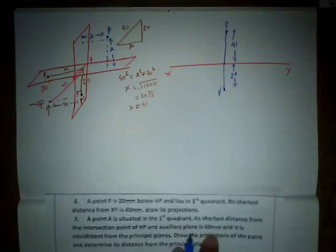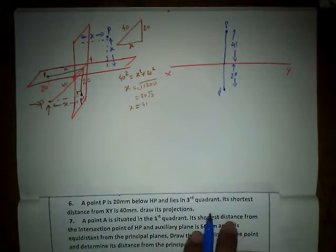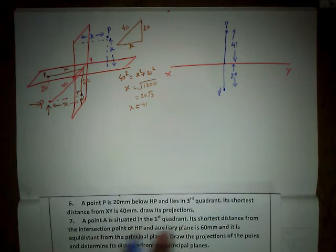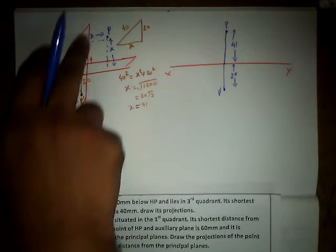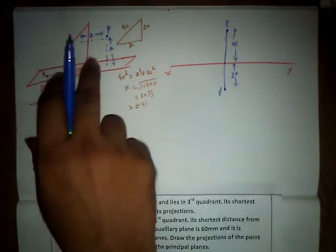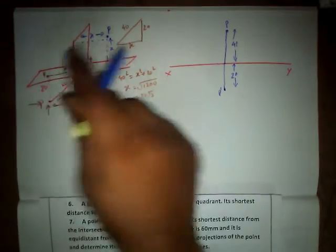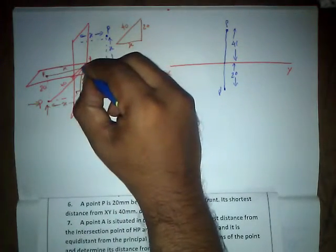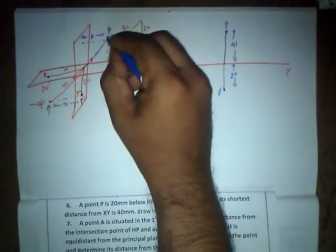The point is at a distance of 60 mm which is the shortest distance from the intersection point of HP, VP and auxiliary plane. This is HP, this is VP and auxiliary plane is a middle plane. All three are intersecting at XY reference line. So the shortest distance from XY reference line to the point P is going to be 60 mm.